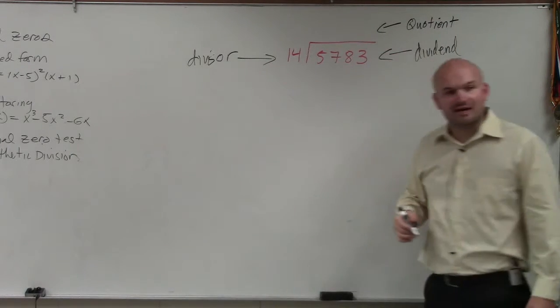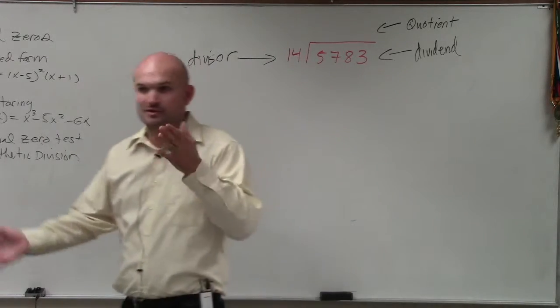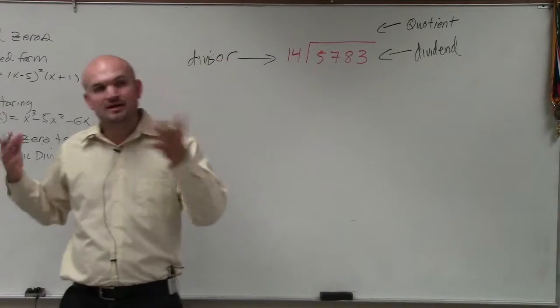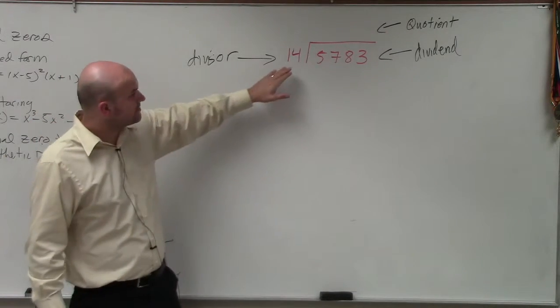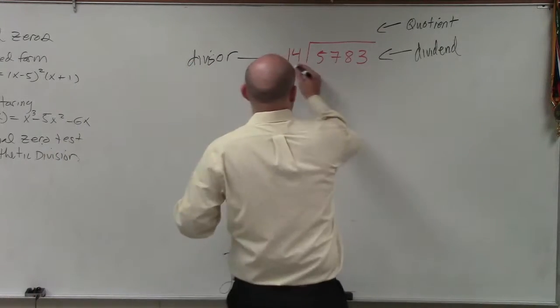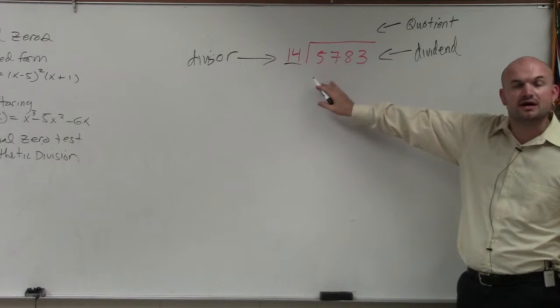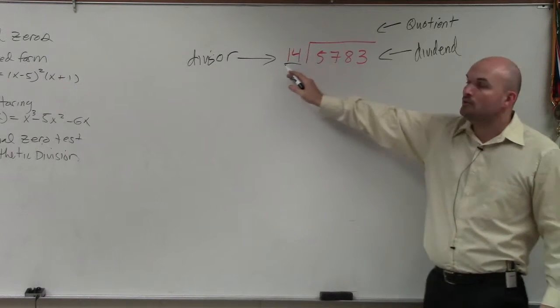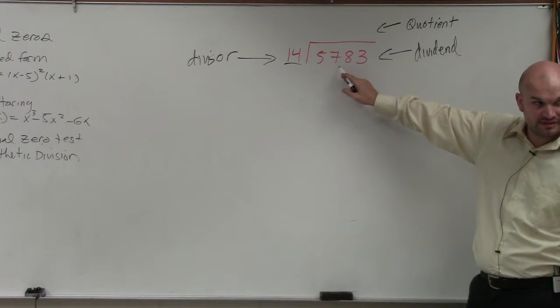It's important you understand these terms because I'm going to use this vocabulary often - divisor, dividend, quotient. Make sure you understand what I'm talking about. Using the long division algorithm, we take our number and first look at the first place value in our dividend, which is 5. Well, 14 does not divide into 5, so then I do 14 dividing into 57.